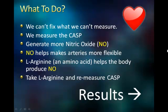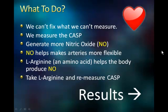So what do we do about high CASP now that we can actually measure it? We can have the body generate more nitric oxide. Nitric oxide and nitrous oxide are two different things — nitrous oxide is used in racing cars and is basically laughing gas, whereas nitric oxide is used by the body to keep things pliable and flowing in the blood supply. It also helps with erectile dysfunction, and most people don't realize that erectile dysfunction is an indication of a cardiovascular problem — it may just be this.